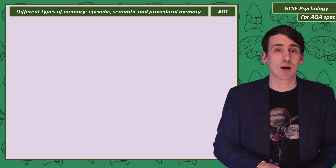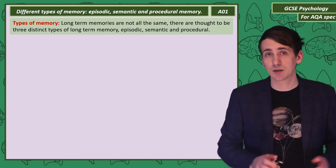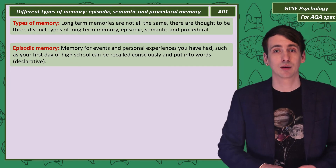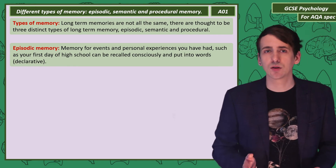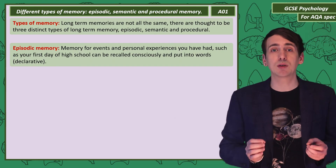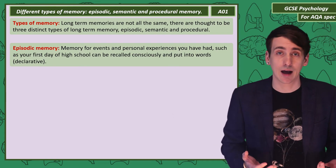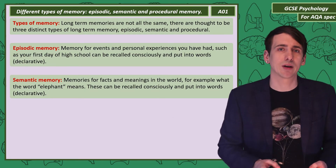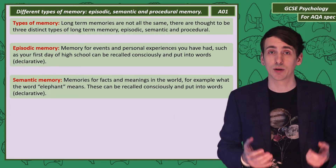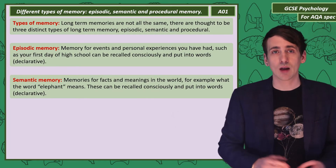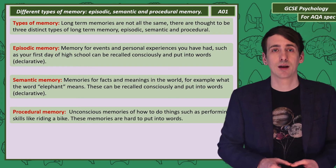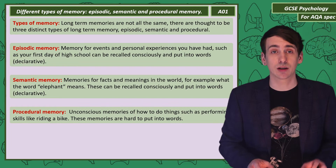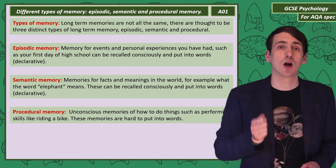Now we need to break down long-term memory into three distinctive types: episodic, semantic, and procedural. Episodic memories are how you remember your personal experiences — things that have happened to you. So if I ask you to remember your first day at high school, you're recalling an episodic memory — you can recall it consciously and describe it in words. Semantic memory is memory for facts and meanings. A very different type is procedural memory — memories for skills, like how to ride a bike or tie a shoelace. These memories are actually really difficult to put into words, and we would call them non-declarative.